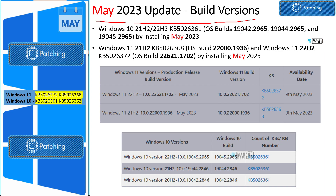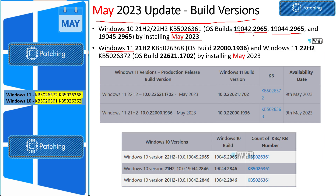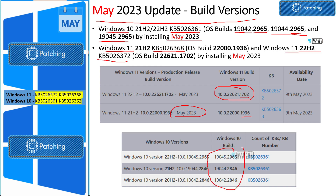Let's quickly check the build versions of Windows 10 and Windows 11 once KB5026361 is installed on devices. The expected build versions should be 19042.2965, 19044.2965, and 19045.2965 depending on your Windows 10 version.